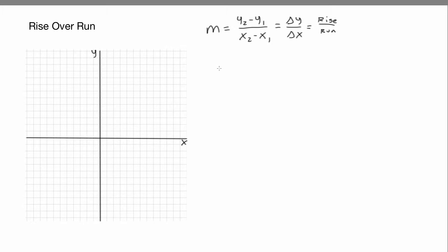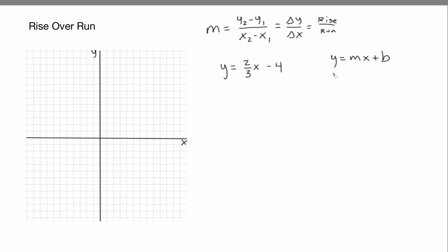Let's do a problem. Let's say we have y equals 2/3 x minus 4. We need to find the slope and the y-intercept. There's a pattern: y equals mx plus b, where we have the slope m and the y-intercept b. That's why it's called slope-intercept form. Comparing that to our equation, we can see that the slope is 2/3 and the y-intercept is negative 4.